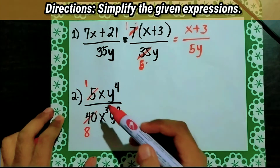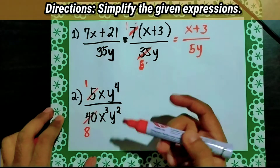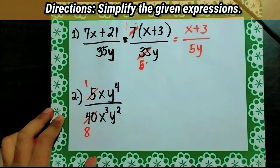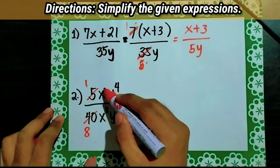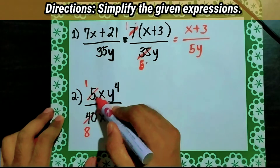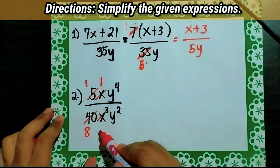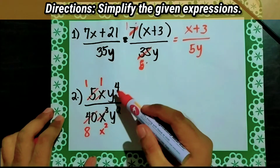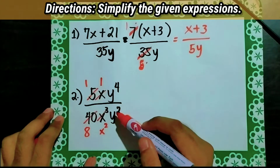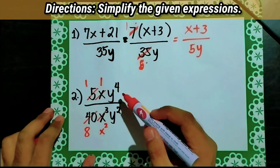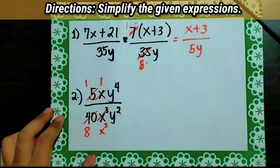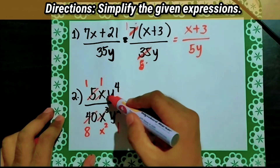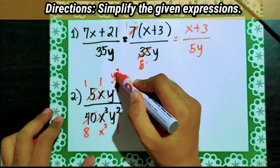For the literal coefficient x, let's divide x by x cubed — subtract the exponents: 3 minus 1 equals 2. So x will become 1 and x cubed will become x squared. Then y raised to 4 divided by y squared: 4 minus 2 equals 2, so y squared becomes 1 and y raised to 4 becomes y squared.